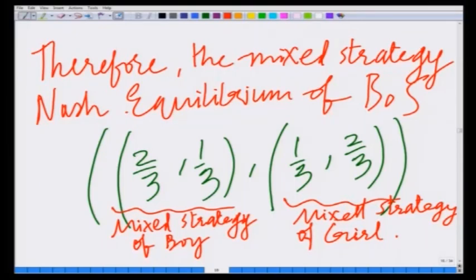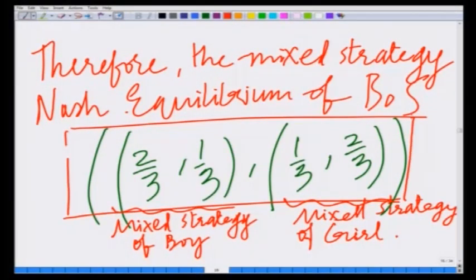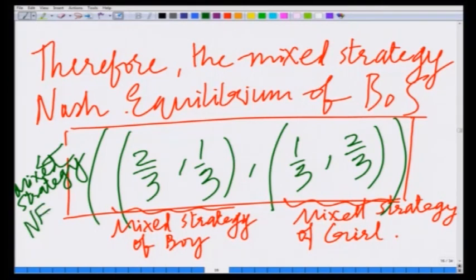So this is the mixed strategy Nash equilibrium of the battle of sexes game. In this mixed strategy Nash equilibrium, the boy is using the mixture (2/3, 1/3) — randomly choosing cricket two thirds of the time and Harry Potter one third of the time — and the girl is randomly choosing cricket one third of the time and Harry Potter two thirds of the time. Both are using randomized mixed strategies. Let us stop this module here and continue in the next module. Thank you.